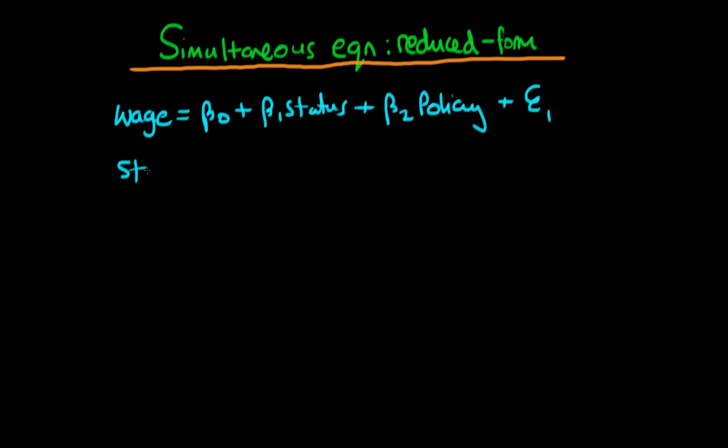Furthermore we stipulated that status would itself be dependent on an individual's level of wage and it might also depend on whether that individual was married which I'm representing here by this M term as well as a whole range of other factors which are contained within this error term epsilon 2.